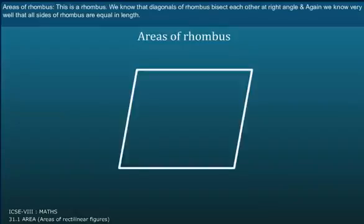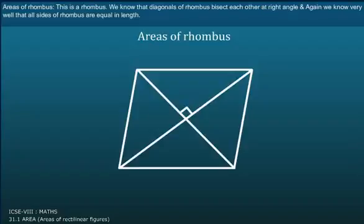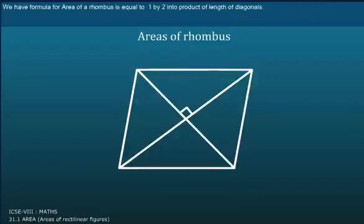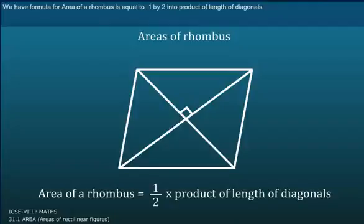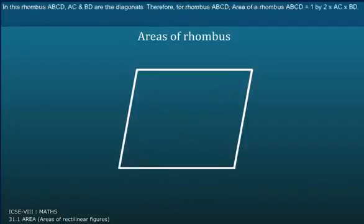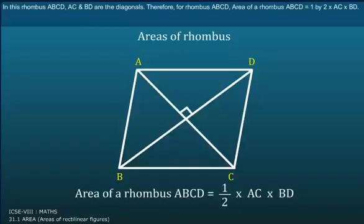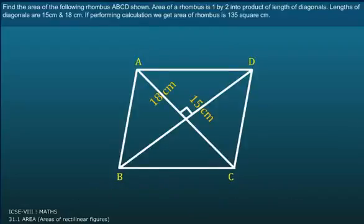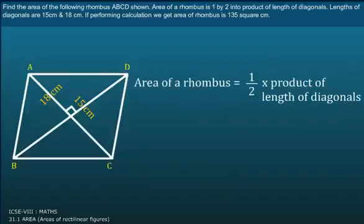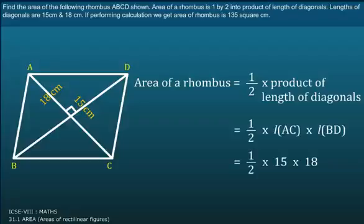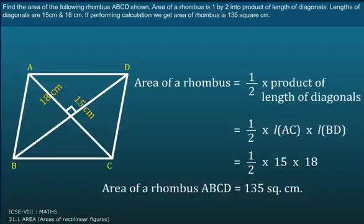Area of Rhombus. This is a Rhombus. We know that diagonals of a Rhombus bisect each other at right angles, and all sides of a Rhombus are equal in length. The formula for Area of Rhombus is equal to 1/2 into product of the length of diagonals. In Rhombus ABCD, AC and BD are the diagonals. Therefore, Area of Rhombus ABCD is equal to 1/2 into AC into BD. Find the Area of Rhombus ABCD as shown. Length of diagonals are 15 centimeter and 18 centimeter. While performing calculation, we get Area of Rhombus is 135 square centimeter.